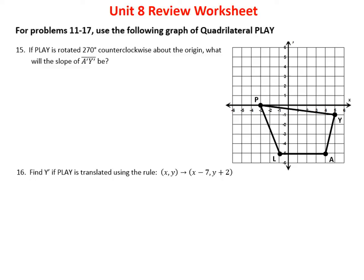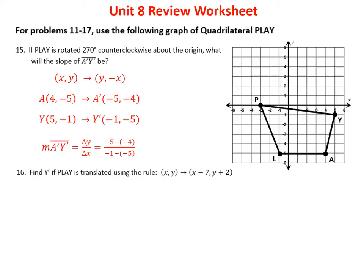Problem 15: if the figure is rotated 270 degrees counterclockwise, what is the slope? For 270° counterclockwise, (x, y) becomes (y, −x). Point A at (4, −5) becomes (−5, −4). Point Y at (5, −1) becomes (−1, −5). The slope is (−4 − (−5)) / (−5 − (−1)) = (−4 + 5) / (−5 + 4) = 1 / (−1)... working through: Y2 − Y1 = −4 − (−5) and X2 − X1 = −5 − (−1) = −4, giving a slope of negative one-fourth.